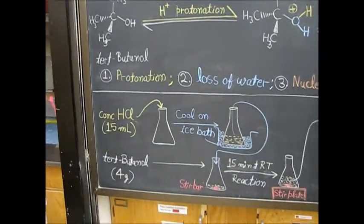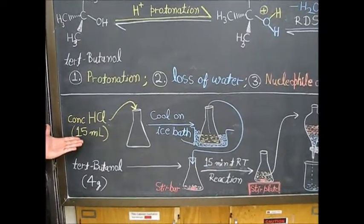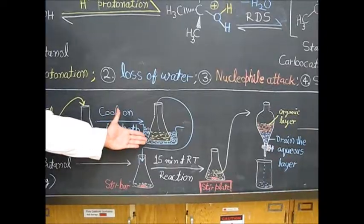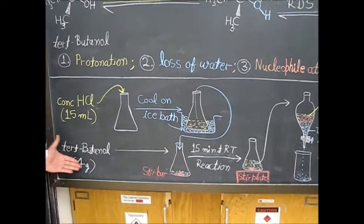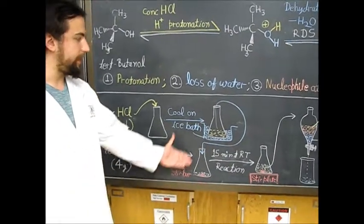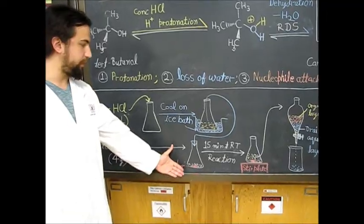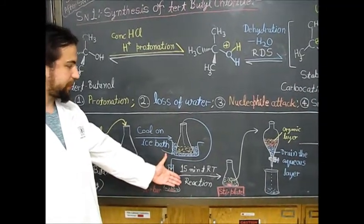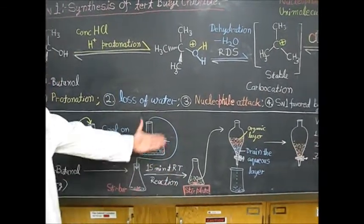The reaction scheme is as follows: firstly take 15 milliliters of concentrated hydrochloric acid, place it into an Erlenmeyer flask, and cool it on an ice bath. Then take four grams of tertiary butanol, place it into an Erlenmeyer with a stir bar, and slowly add the cooled HCl into the reaction flask. After about 15 minutes at room temperature with stirring, the reaction should be done.